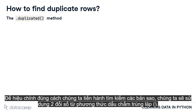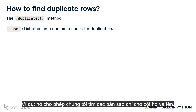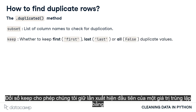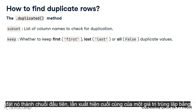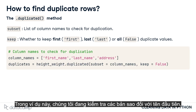To properly calibrate how we go about finding duplicates, we will use two arguments from the .duplicated() method. The subset argument lets us set a list of column names to check for duplication — for example, it allows us to find duplicates for the first and last name columns only. The keep argument lets us keep the first occurrence of a duplicate value by setting it to the string 'first', the last occurrence by setting it to 'last', or keep all occurrences by setting it to false. In this example, we're checking for duplicates across the first name, last name, and address columns, and we're choosing to keep all duplicates.